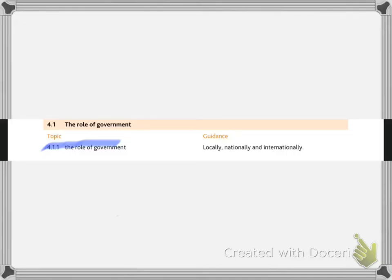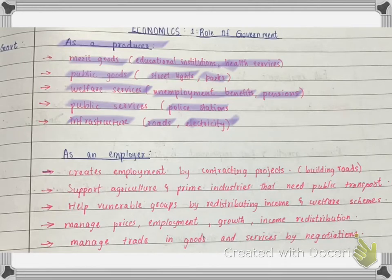In this topic we'll be learning the role of government. The role of government as a producer is to supply merit goods, such as educational institutions and health services, public goods like street lights and parks, and welfare services such as unemployment benefits and pensions.